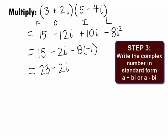In Step 3, we want to write the final answer in standard form. Note that the standard form of a complex number is a plus bi or a minus bi. So, our final answer is 23 minus 2i.